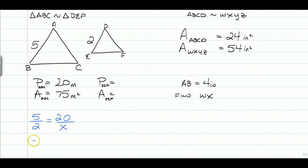Cross multiply, 5x is equal to 40, so x is equal to 8. So we know that the perimeter of triangle DEF is going to be 8 meters.